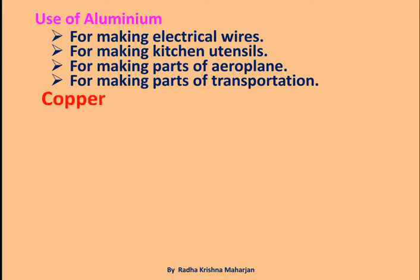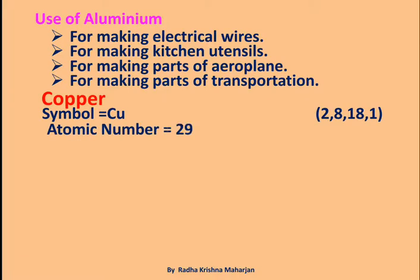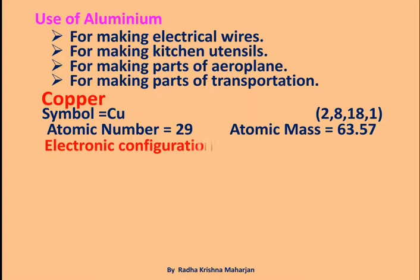Copper: Symbol Cu, shell configuration [2,8,18,1], Atomic Number 29, Atomic Mass 63.57. Electronic Configuration: 1s2 2s2 2p6 3s2 3p6 3d10 4s1.